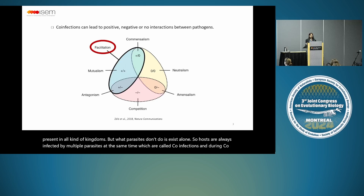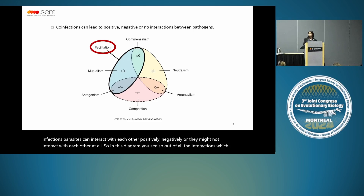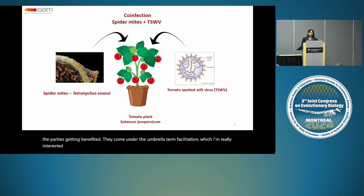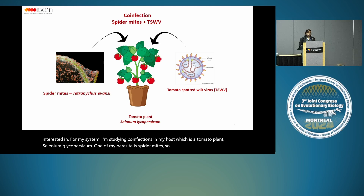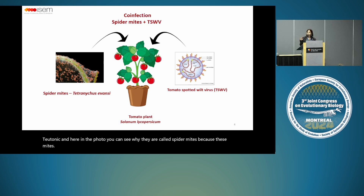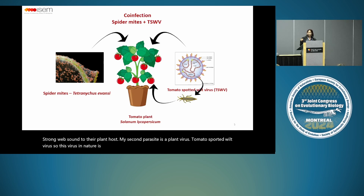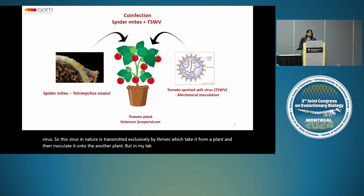The interactions which lead to at least one party getting benefited come under the umbrella term facilitation, which I'm really interested in. For my system, I'm studying co-infections in my host, which is a tomato plant, Solanum lycopersicum. One of my parasites is spider mites — the red ones are Tetranychus evansi, and you can see why they're called spider mites because they weave very strong webs onto their plant host. My second parasite is a plant virus, tomato spotted wilt virus, which in nature is transmitted exclusively by thrips. But in our system, we do a mechanical inoculation — we just have spider mites and viruses which are mechanically inoculated.